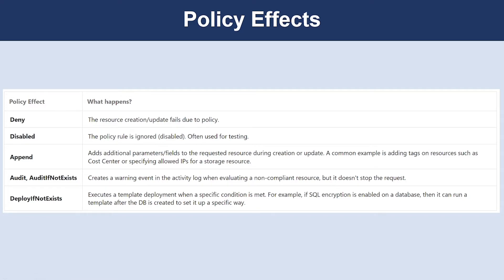Now let's talk about the policy effects. Requests to create or upgrade a resource through Azure Resource Manager are evaluated by Azure Policy first. Policy creates a list of all assignments that apply to the resource and then evaluates the resource against each definition. Policy processes several of these effects before handling the request to the appropriate resource provider, to avoid any unnecessary processing if the resource violates policy. Each policy definition in Azure Policy has a single effect, and that effect determines what happens when the associated policy rule is matched.